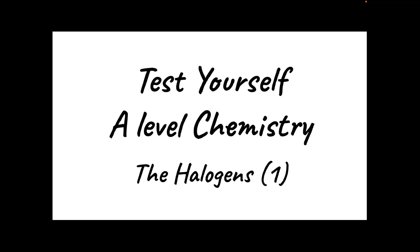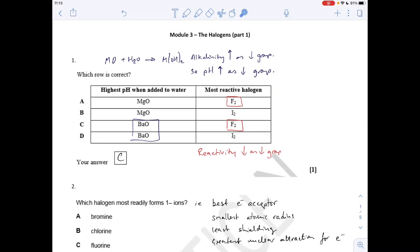Question one is testing our knowledge of a couple of group trends. We've got a group two trend and a group seven trend. For the highest pH when added to water, when you take a group two oxide MO with water, it makes the group two hydroxide. The trend is that the alkalinity increases as you go down the group because these get more soluble. So the pH will increase as you go down the group, so the barium oxide is the one furthest down the group.